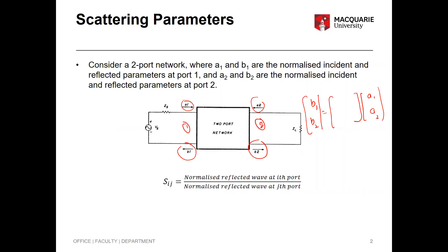The scattering parameter matrix characterizes what happens inside the network. If you know your scattering parameters and your incident signals, you can calculate your reflected signals. Scattering parameters are frequency dependent — for each frequency point you have a certain set of S-parameters. If you know the reflection and transmission coefficients and the amplitude of the incoming signals, you can calculate reflected signals and power transfers.